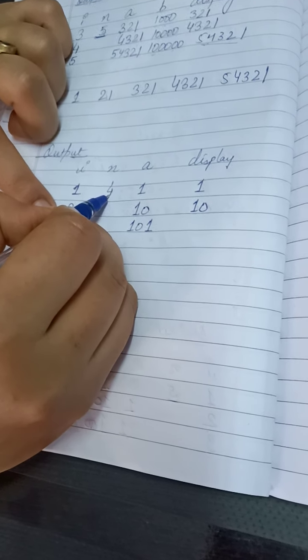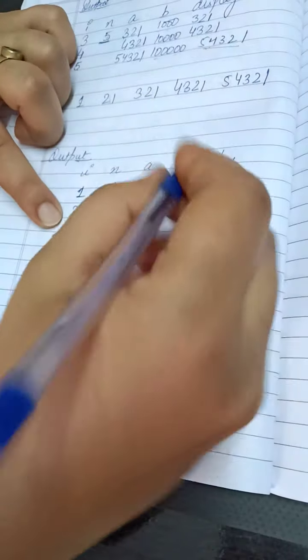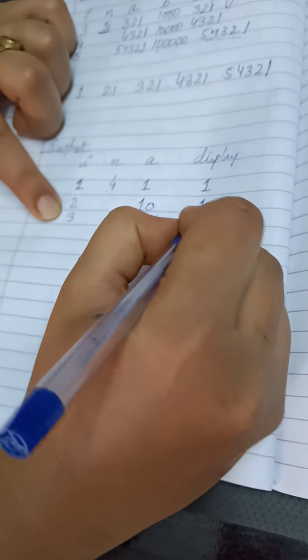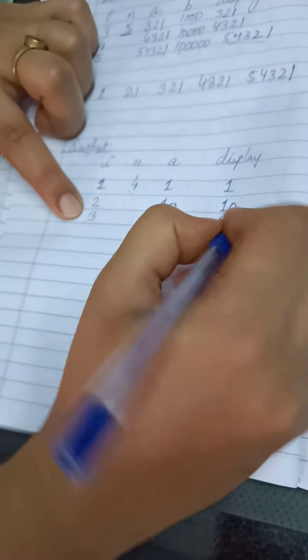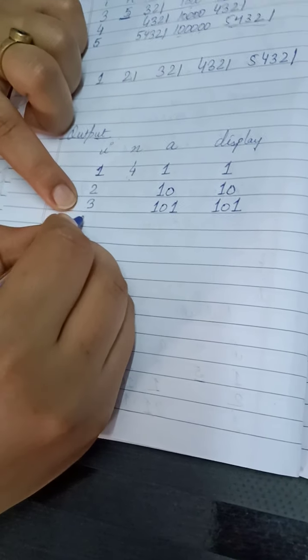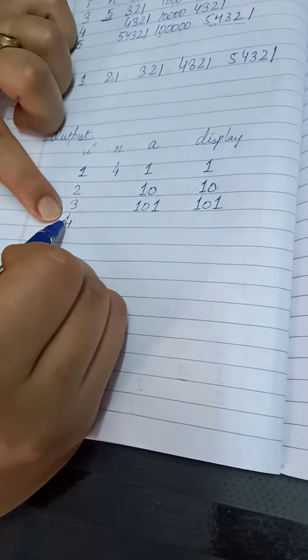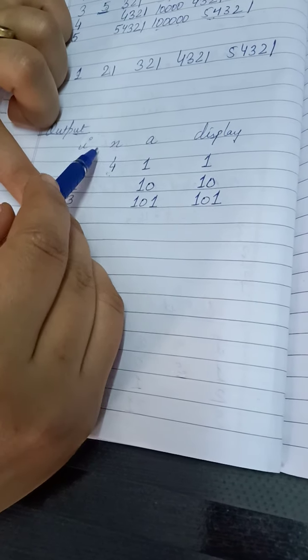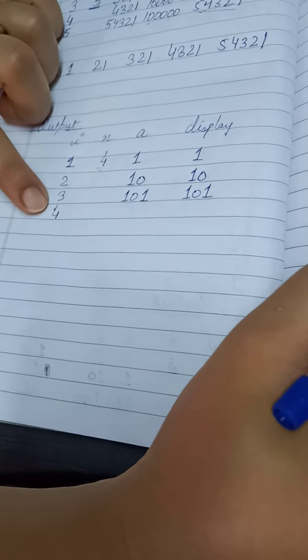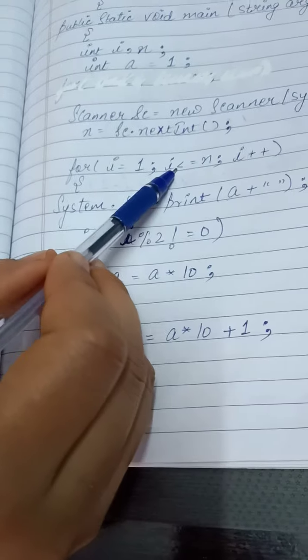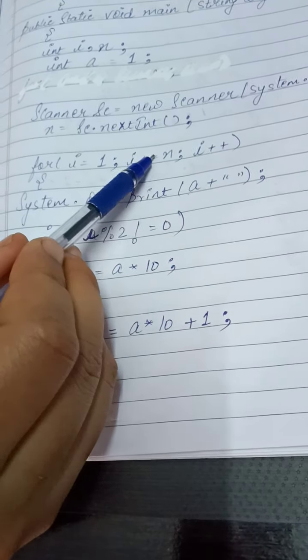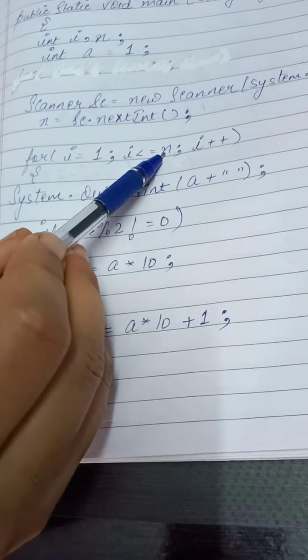Now 3 is less than 4, condition is true. It will display here a, that is 101. Now in the next step value of i will become 4. Now 4 is equal to 4. The condition was i less than is equal to n. So it will ignore this less than part and it will work, because i is equal to n.